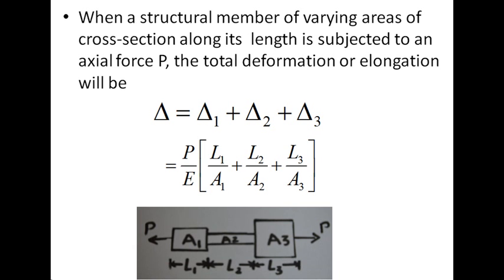For example, we are considering a bar which has three different cross-section areas. In this figure you can see three sections of this bar with different cross-sectional areas. The first section has area A1 and length L1, the second has area A2 and length L2, and the third has area A3 and length L3. We are considering an axial force P at both ends of the bar.